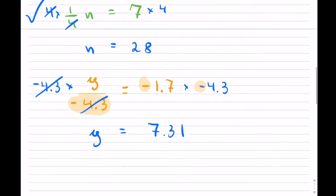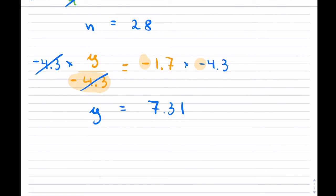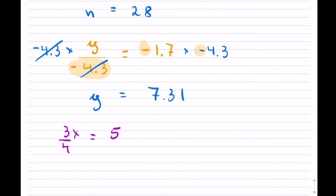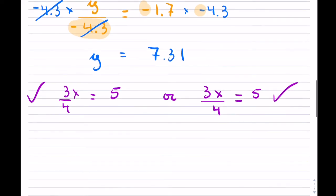You can also start dealing with fractions, which a lot of people do not like. The last kind of example I wanted to show: what if you have a fraction like 3x over 4 equals 5? You may also see it written with the division separating the variable as well. Both of these are the same, and you approach them in exactly the same fashion.